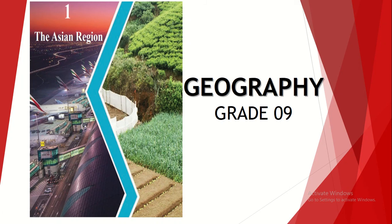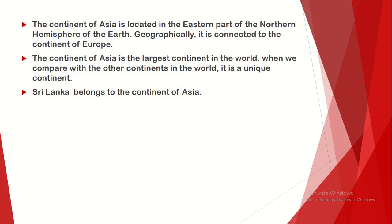Welcome, my dear children. Grade 9 geography, first unit: the Asian region. Today we are going to discuss about the Asian region. The continent of Asia is located in the eastern part of the northern hemisphere of the earth. You already know that the earth's surface consists of seven large continents: Asia, Africa, North America, South America, Europe, Antarctica, and Australia.